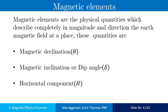Magnetic declination is represented by theta. Magnetic inclination is represented by delta. Horizontal component is represented by H. Now let us study these components one by one.